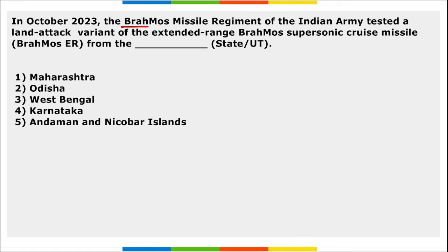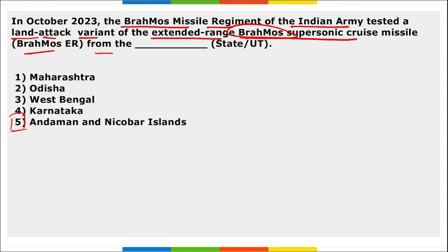Next: the BrahMos Missile Regiment of the Indian Army tested the land attack variant of the extended range BrahMos Supersonic Cruise Missile. It was launched from the Union Territory of Andaman and Nicobar. BrahMos ER — Extended Range — was developed by BrahMos Aerospace, which is a joint venture between Russia and India.